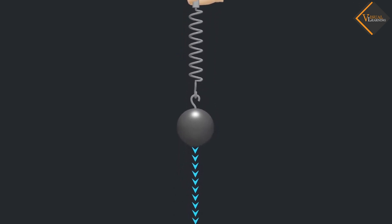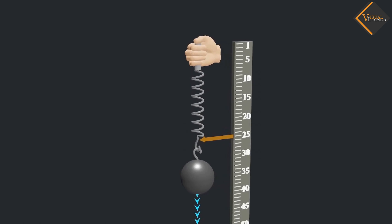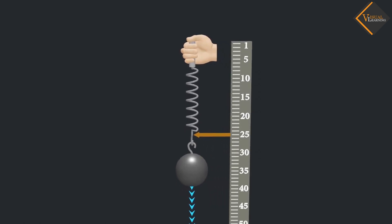We have learnt that weight is the force acting vertically downwards. Because of the weight of the iron ball, it falls downwards. Since the spring is attached to the iron ball, it gets stretched up to a certain limit.